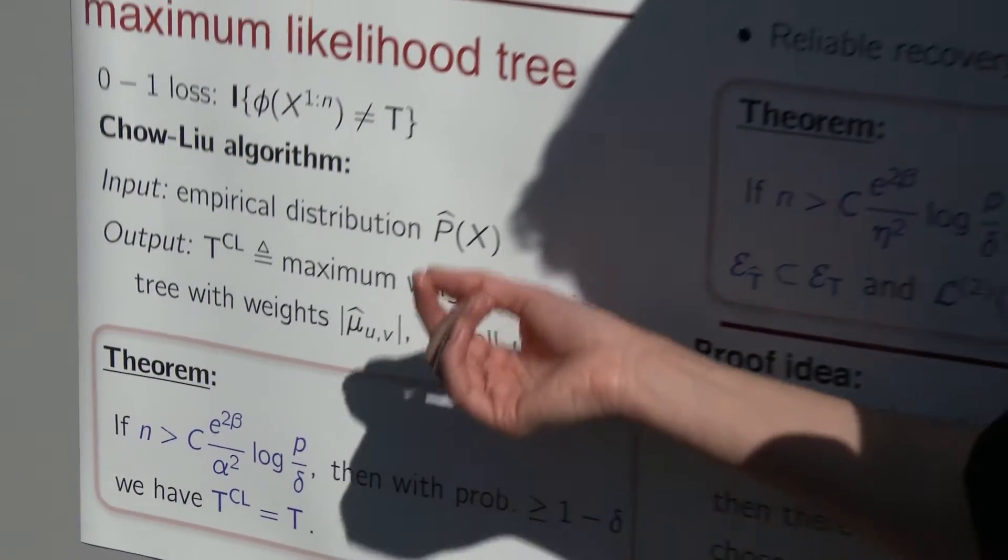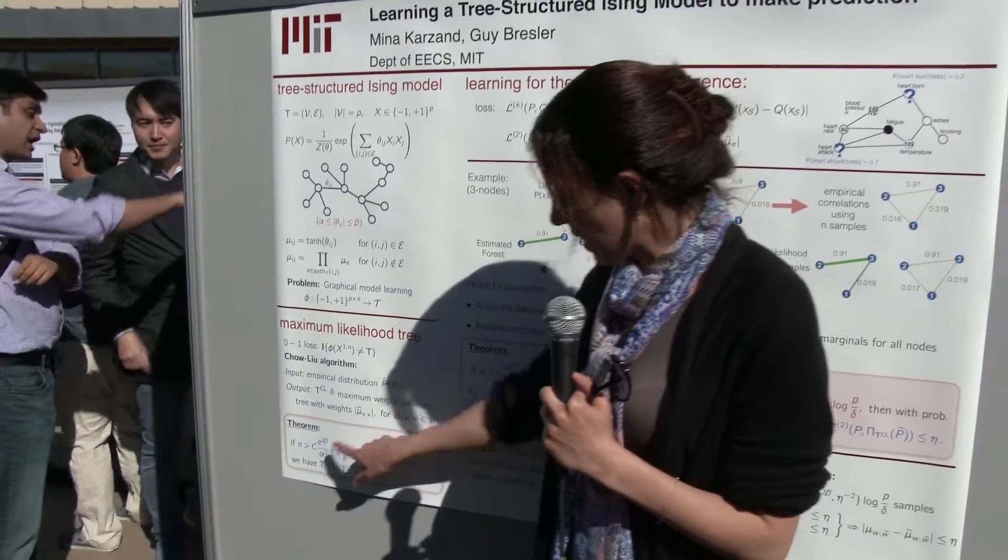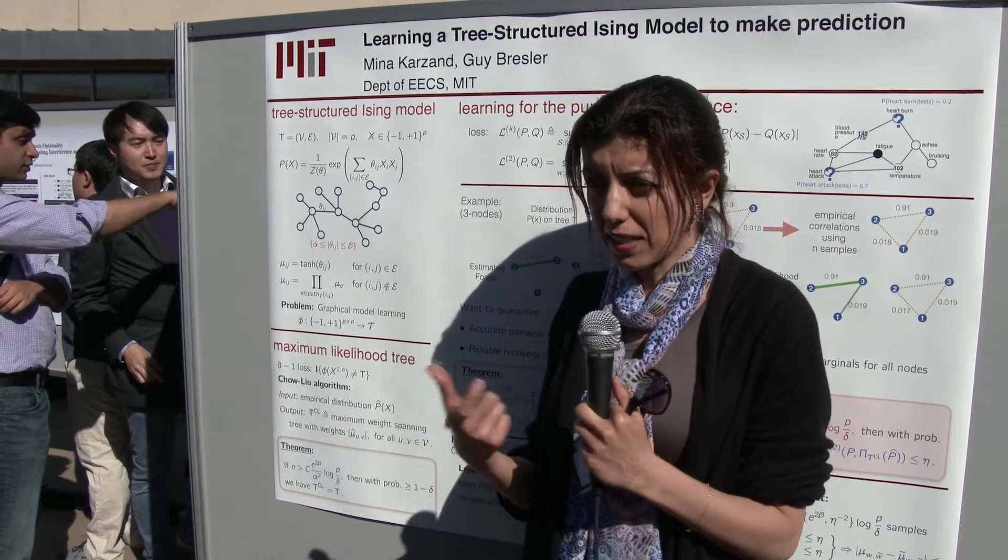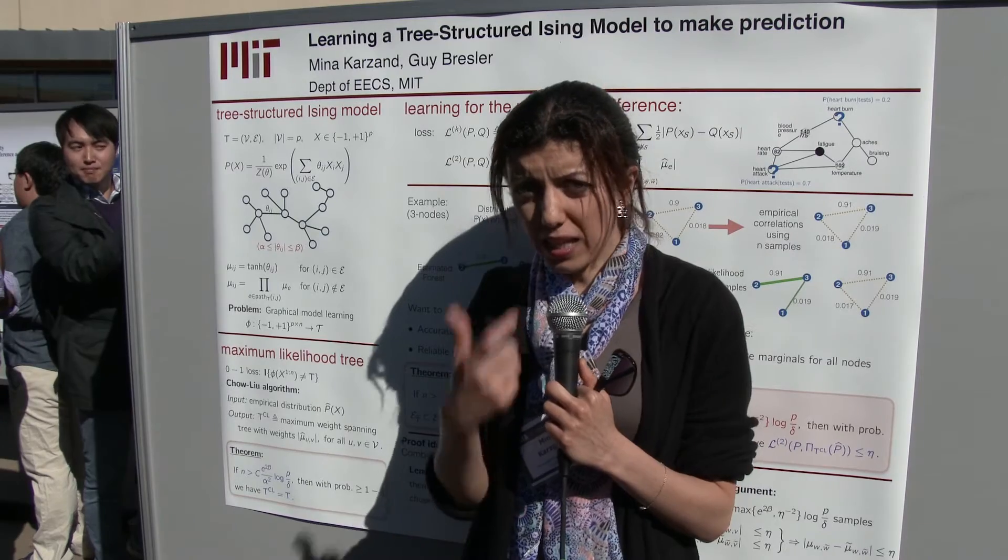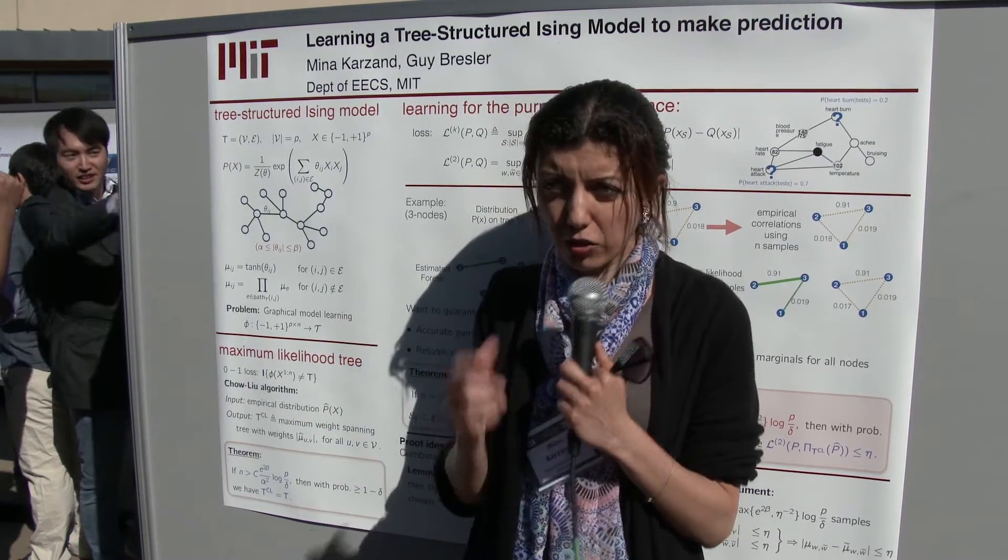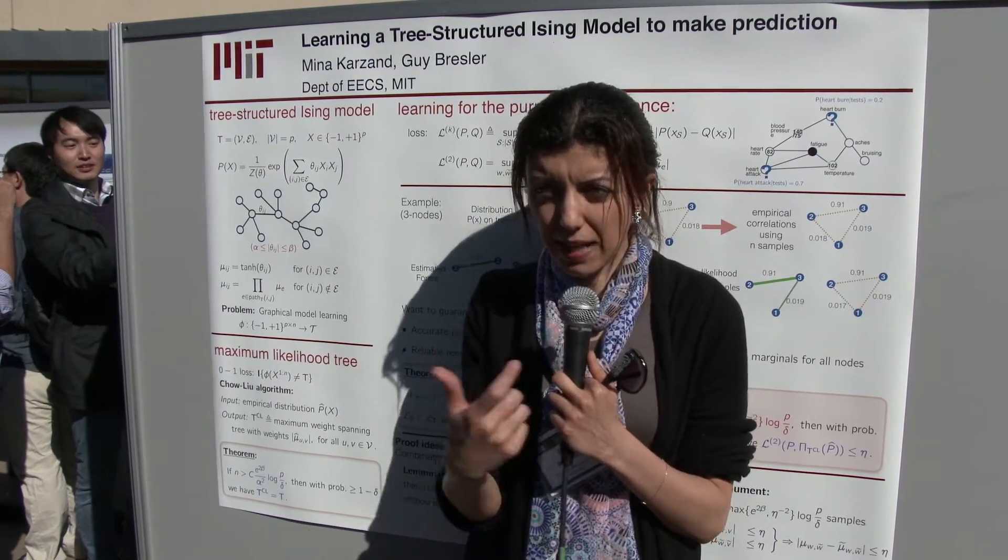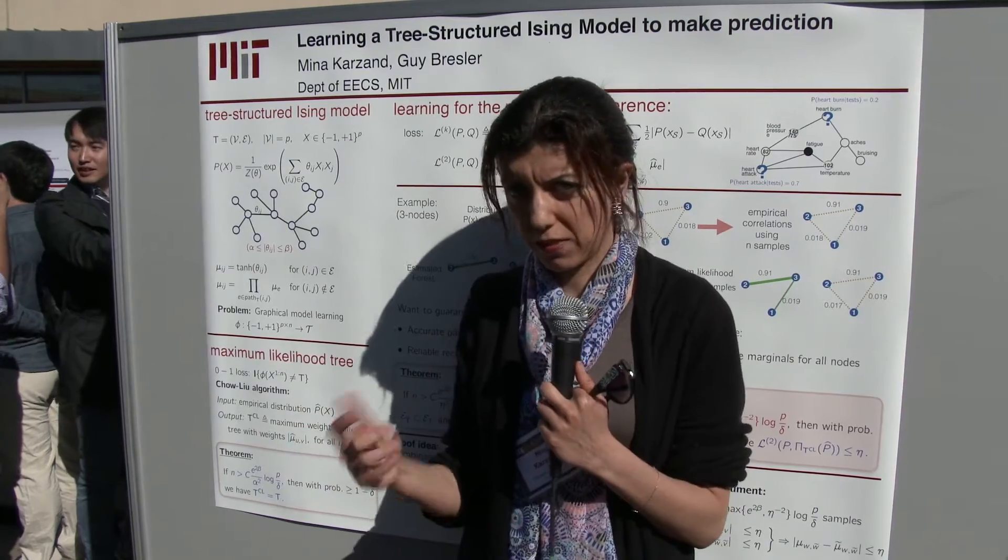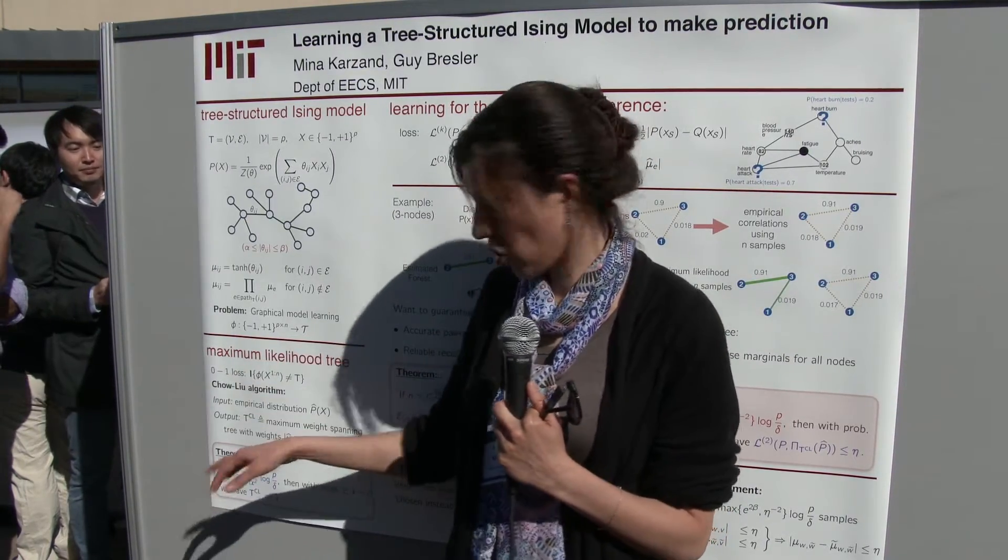There is an intuitive reason for that. To understand the dependence on alpha, let's think about two nodes. If we have two nodes that are weakly correlated, or they are uncorrelated, it's very hard to detect if there is an edge between them or not. I need many samples to recognize if there's a weak edge or there's no edge between them. That's why as alpha is going to zero, the number of samples is growing.